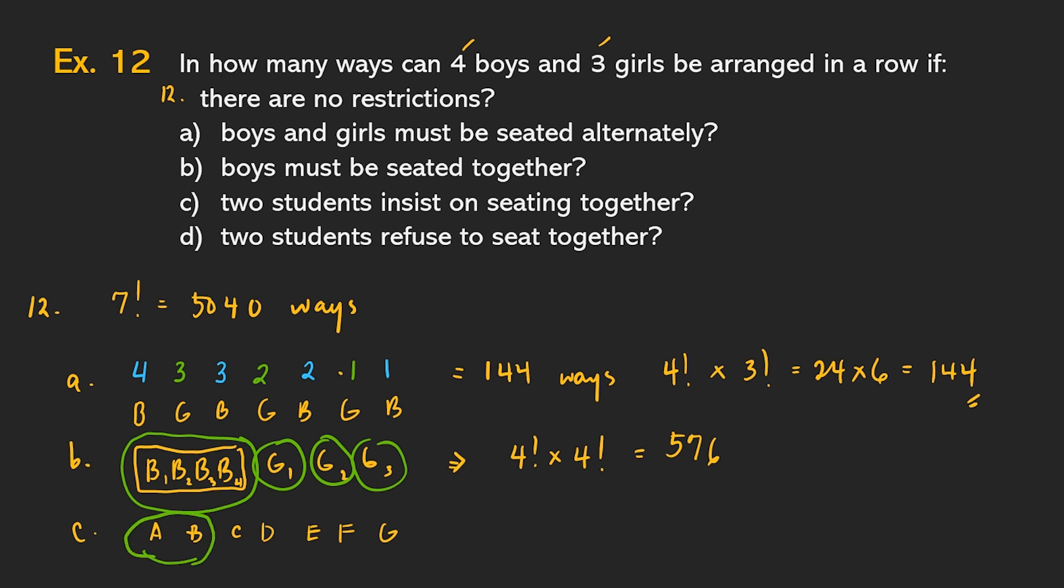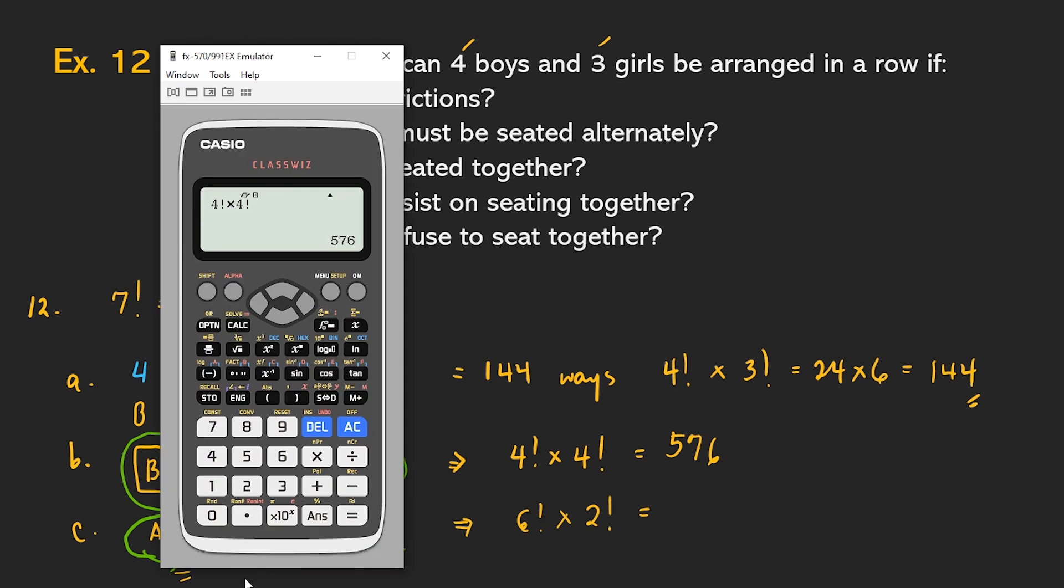So, igugroupo natin itong A at B. Ibig sabihin, we have how many objects to arrange? We have one, two, three, four, five, six. We have six objects to arrange, which we can do that in six factorial ways. But do not forget, yung ginurupo mong dalawa, ay meron pang arrangement within them, which can be done in two factorial ways. Again, saan nanggaling in two factorial? Nanggaling siya dito sa arrangement nitong dalawang gustong magkatabi sila. Kasi they can be seated as A, B, or pwede rin namang B, A. So, six factorial, times two factorial, times two factorial.